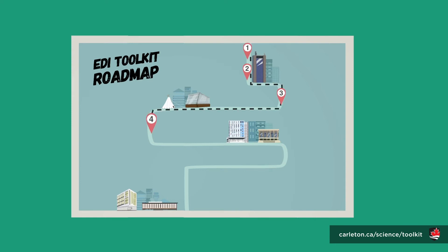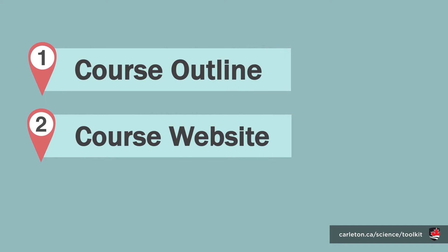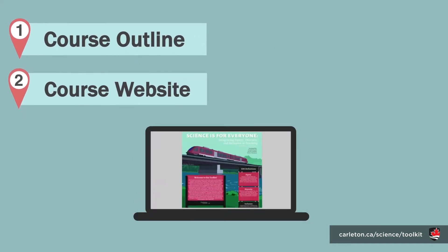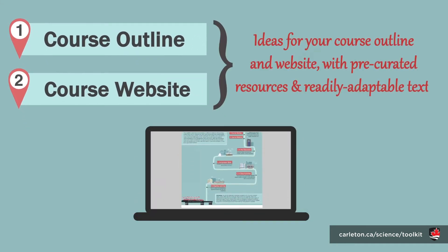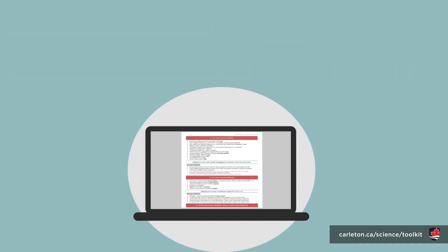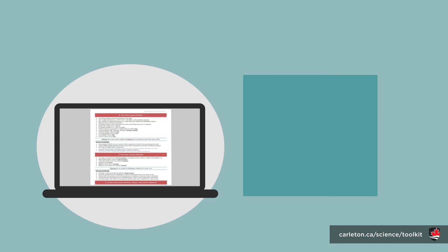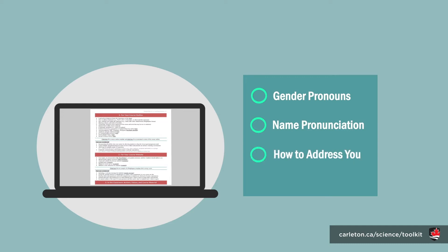The tools have been divided into six subsections. The first and second sections feature pre-curated resources and readily adaptable text to help you build your course outline and course website. These tools and suggestions include small and simple actions that you can do, like listing your gender pronouns, adding a button with the pronunciation of your name, and letting students know how you would like to be addressed.